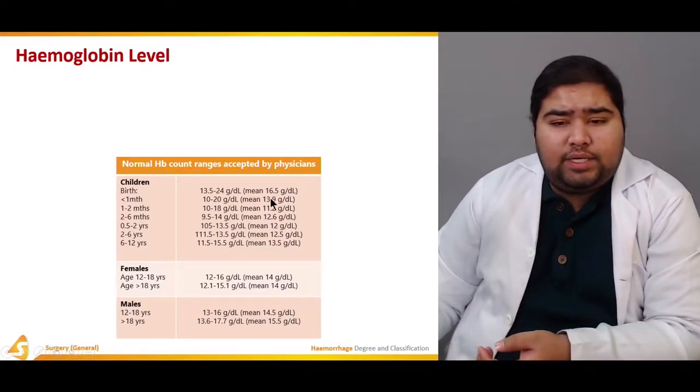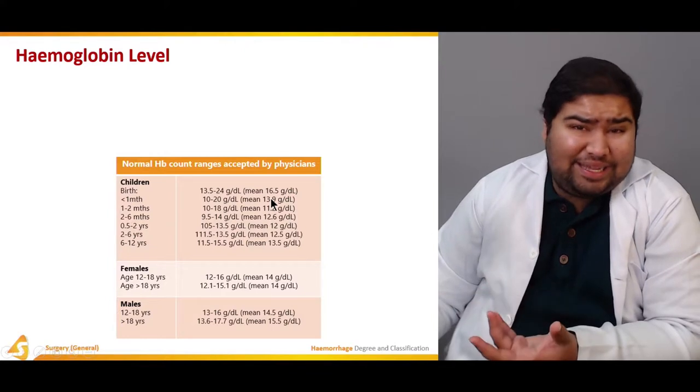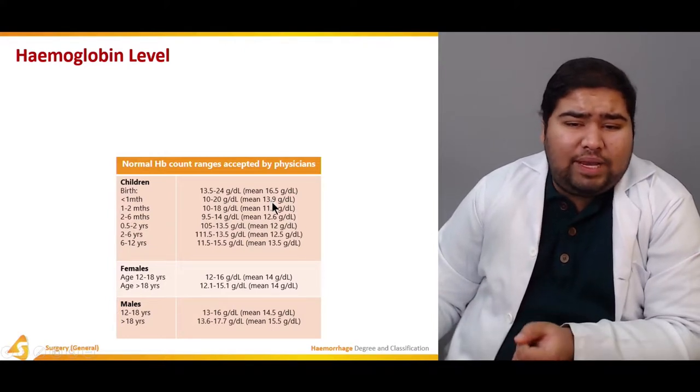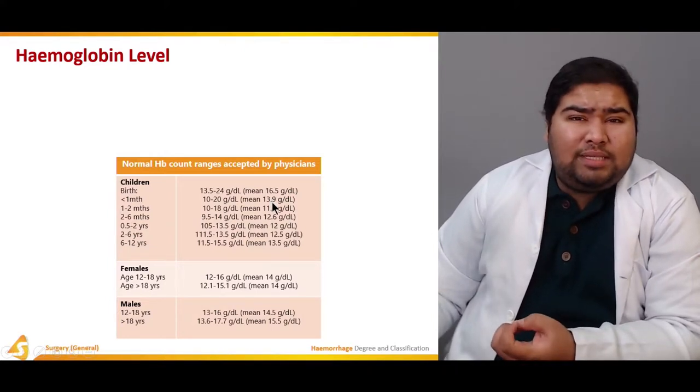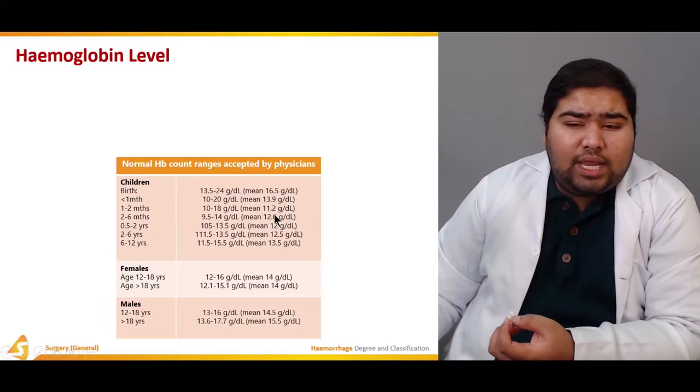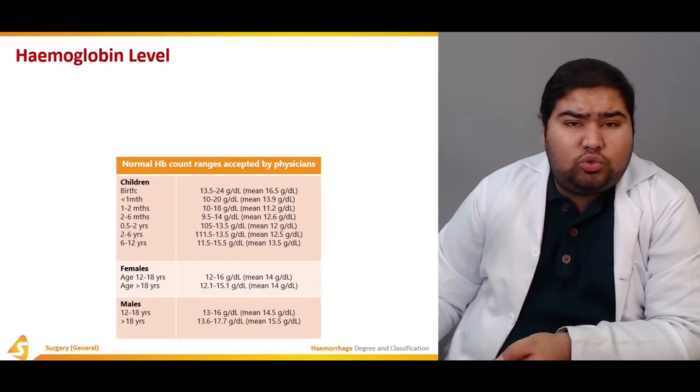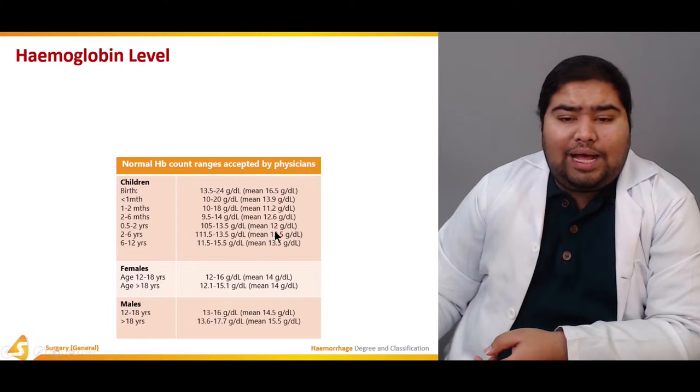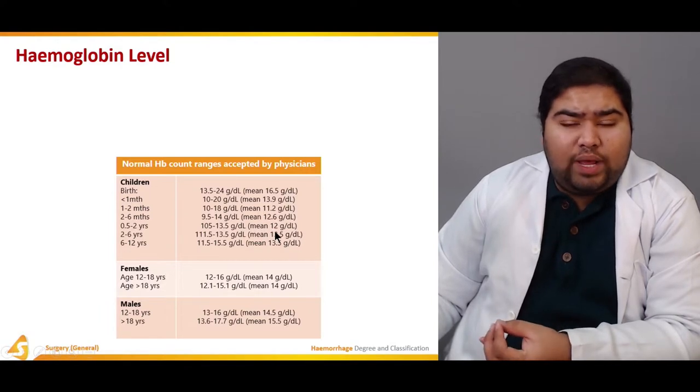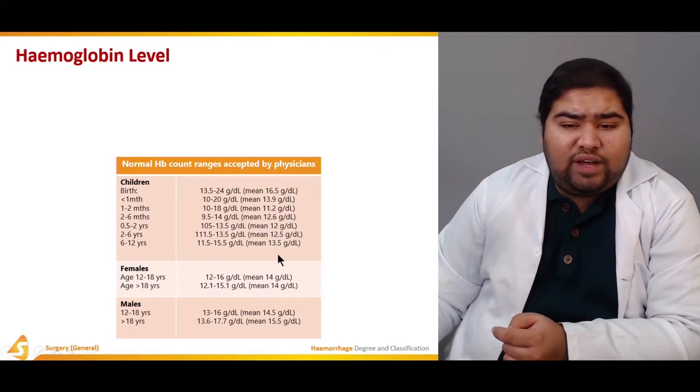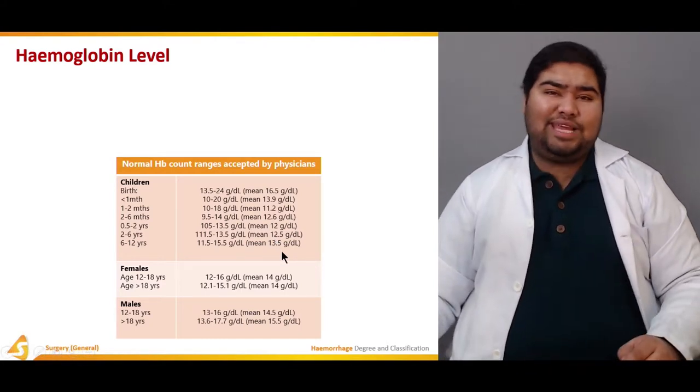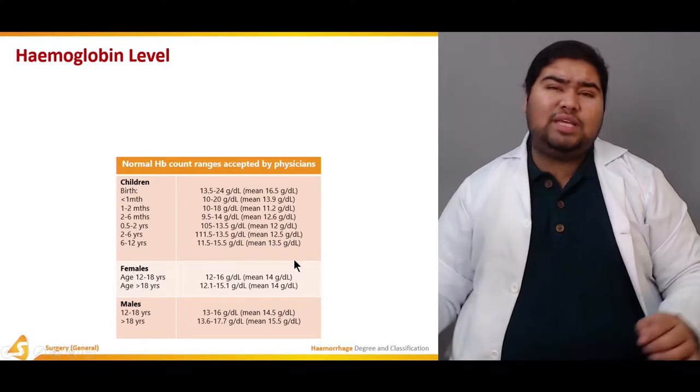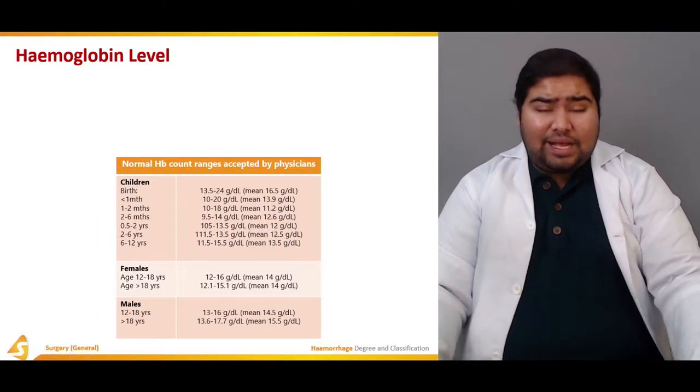At birth it's 16.5, that's a higher hemoglobin level. At one month it is 13.9, then at one to two months it's 11.2, at two to six months it's 12.6, up to two years it's 12, from 2 to 6 it's 12.5, and from 6 to 12 it's 13.5. These are the accepted levels.